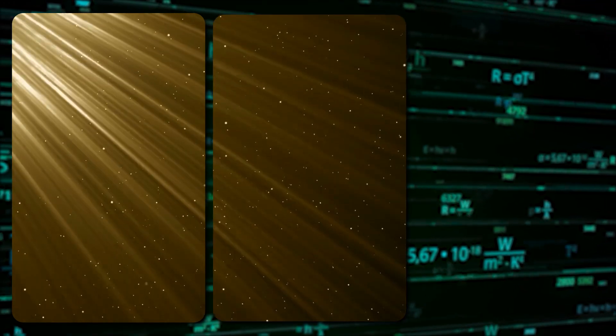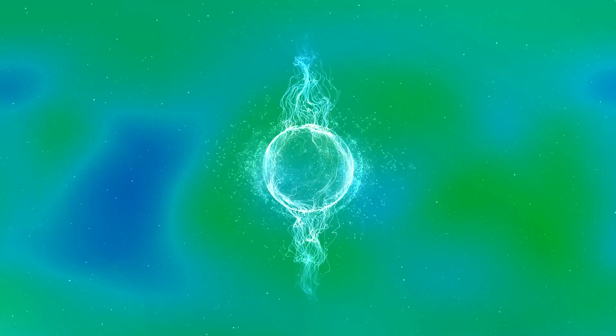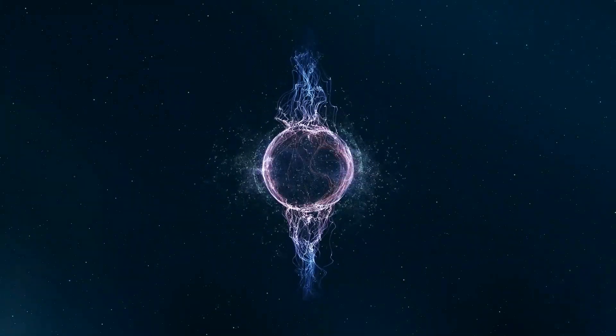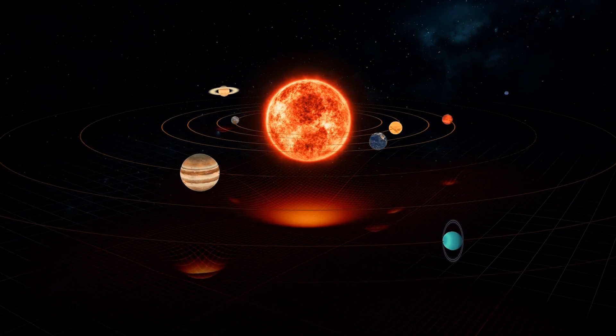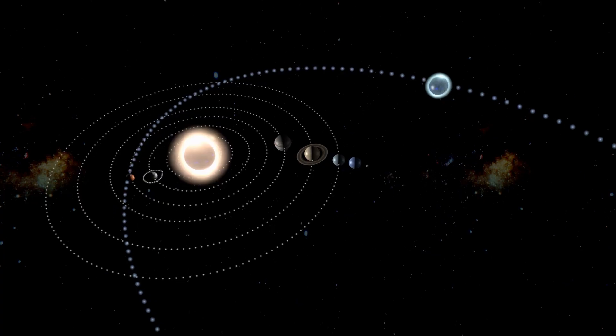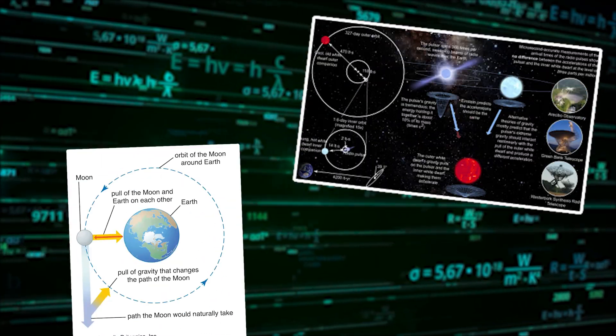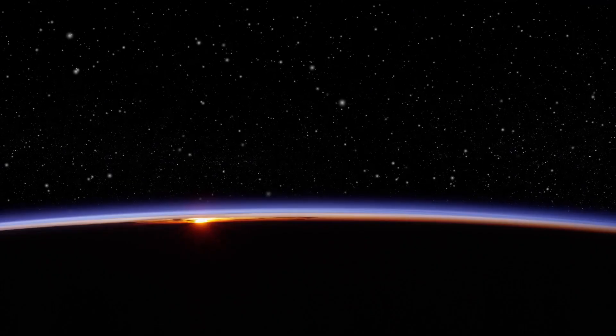The key to understanding how light is affected by gravity lies in this concept of space-time curvature. When a photon, or a particle of light, travels near a massive object, its path is influenced by the curvature of space-time created by that object's mass. The photon is not being pulled or pushed in the traditional sense, as would be expected in a force-to-mass interaction. Instead, it is simply following the curved path that space-time itself has taken around the massive object. This is analogous to a marble rolling along a curved surface.